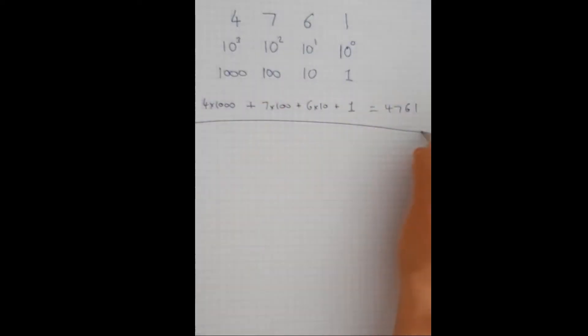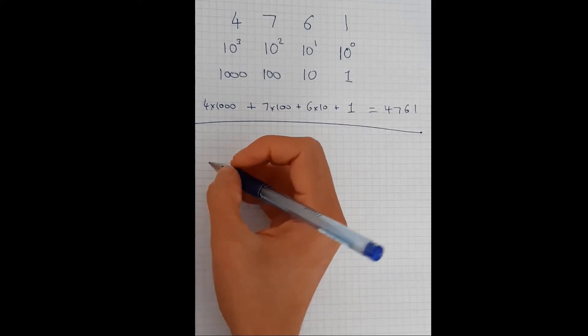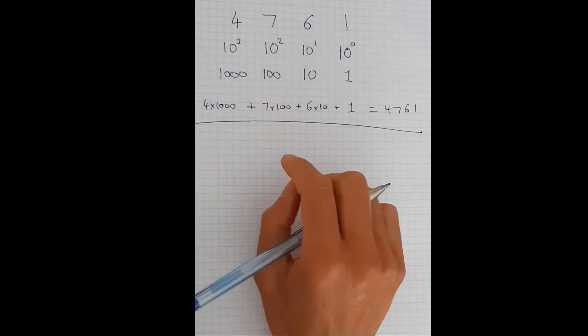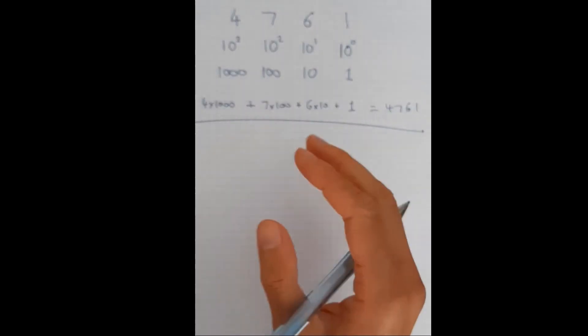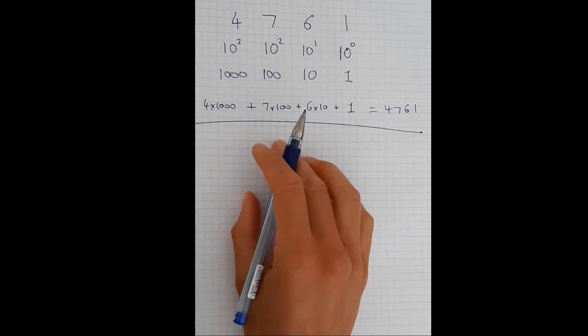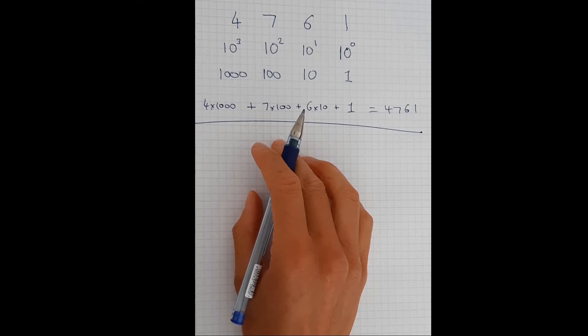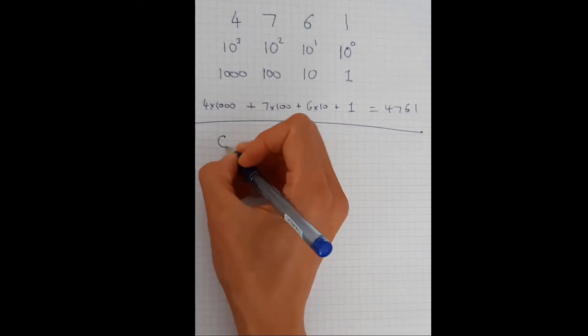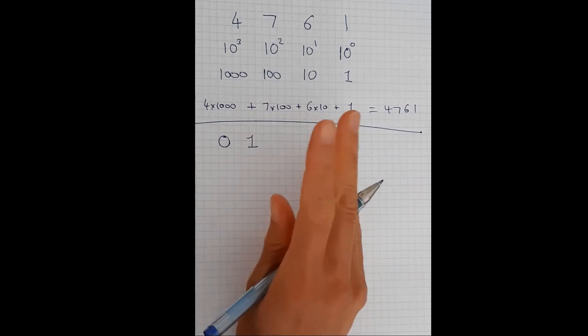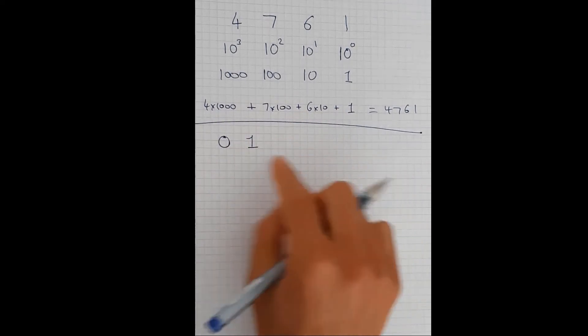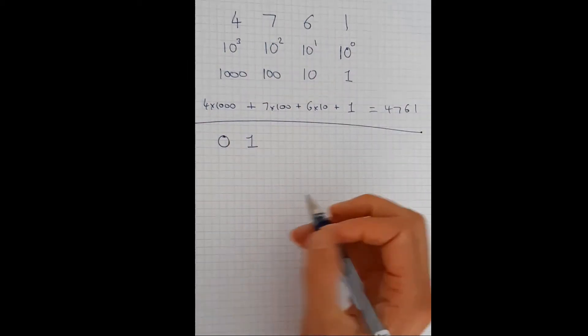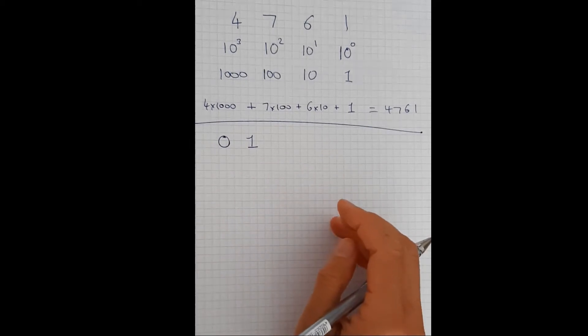In base-2, in our binary system, we only have two different digits. In our decimal system, we had 10 different symbols that we could use for counting. Now in order to count in binary, you need two different digits. We have a zero and a one. So in order to count higher than zero and one, we need to start using the same sort of positioning system.